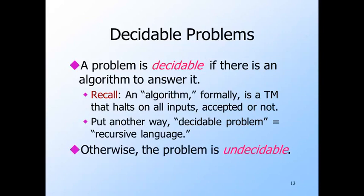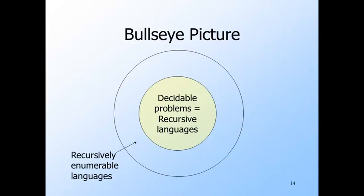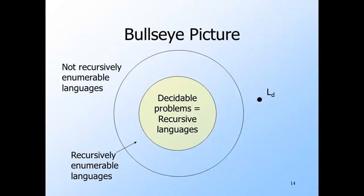The opposite of decidable is undecidable. So here is what we know about languages so far. In the center we see the recursive languages, or as problems, the decidable problems. Then there is a superset of the recursive languages called the recursively enumerable languages — these are the languages accepted by Turing machines with no guarantee that they will halt on inputs they never accept. And then there is outer space: the uncountably many languages that are not recursively enumerable, which have no Turing machine at all. So far, we have one example of a language, L sub D, that lives in this outer region.